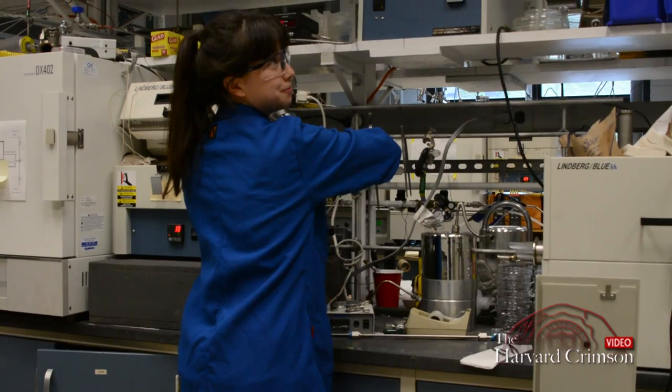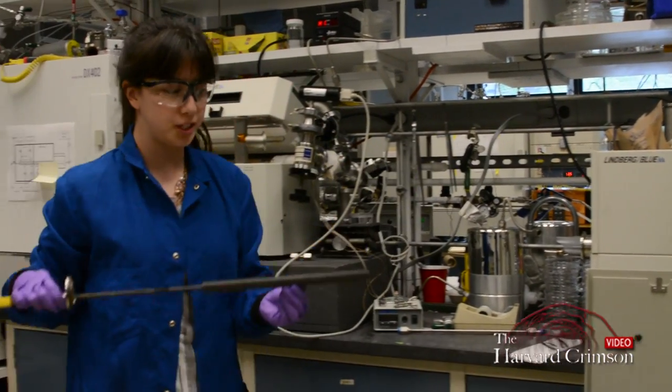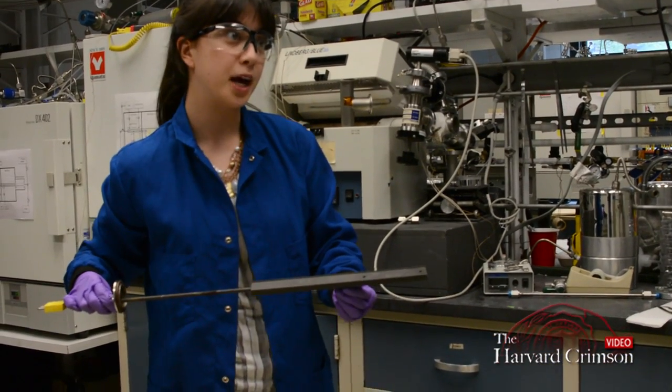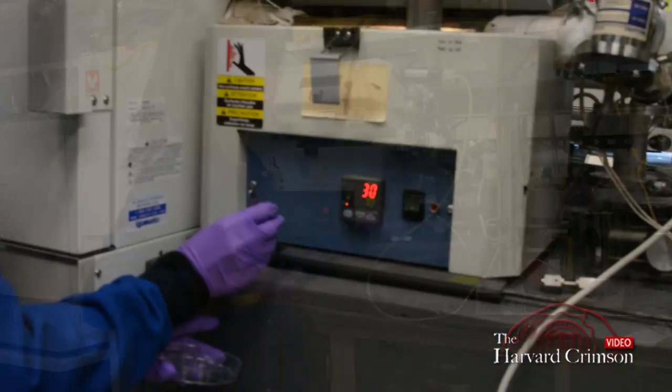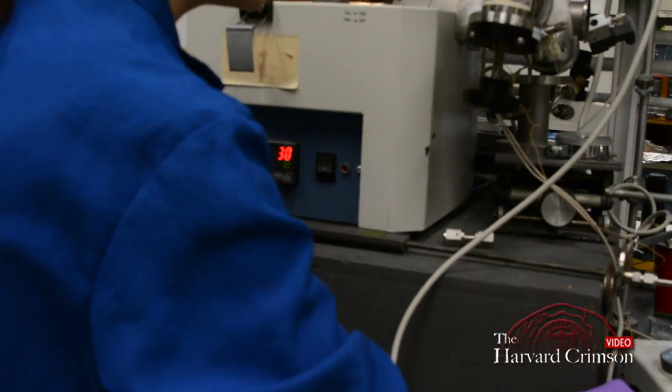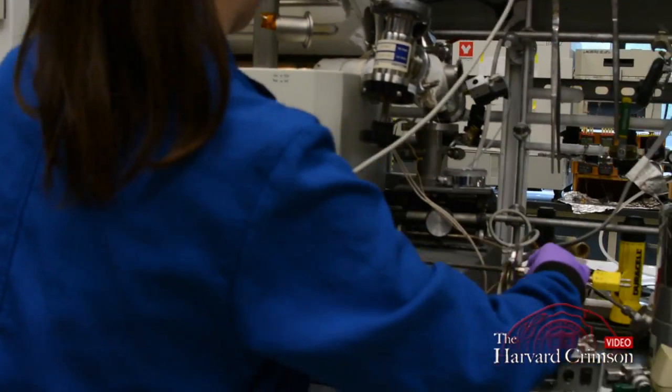It's called a tube furnace. So I'll open it up. And there are no solar cells on here right now. But what I'll do is I'll take blank glass, for example, and I'll place my samples onto the baking sheet and then put them in the oven.